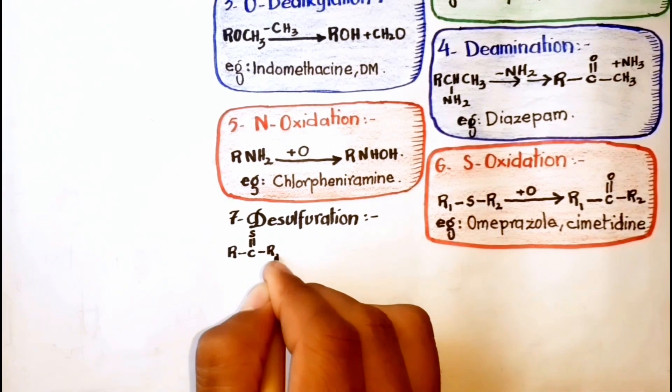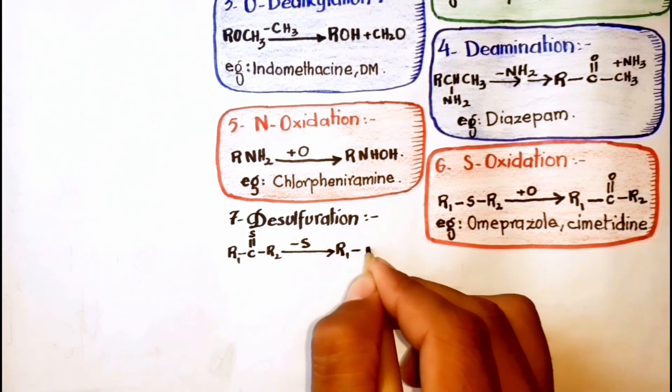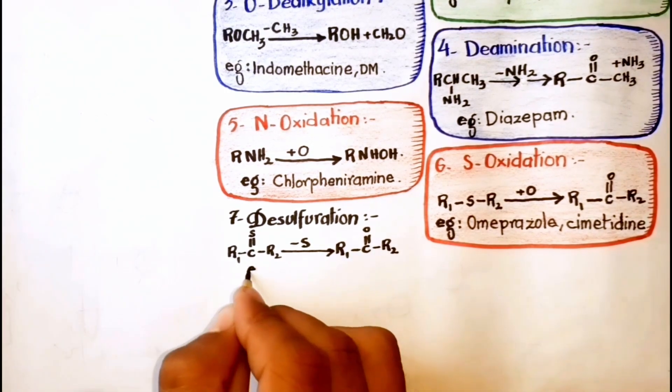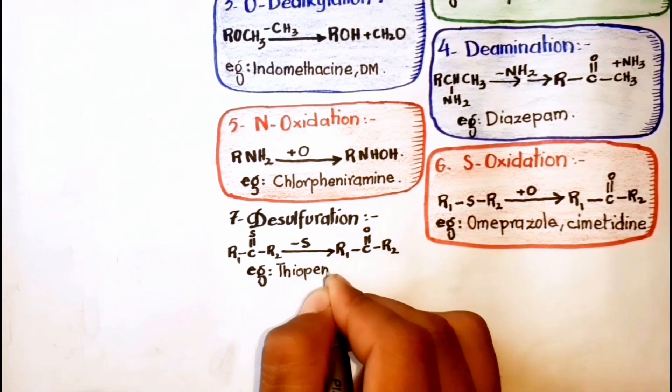Seventh is desulfuration, the reaction in which a sulfur atom is removed from the drug. For example, thiopental.